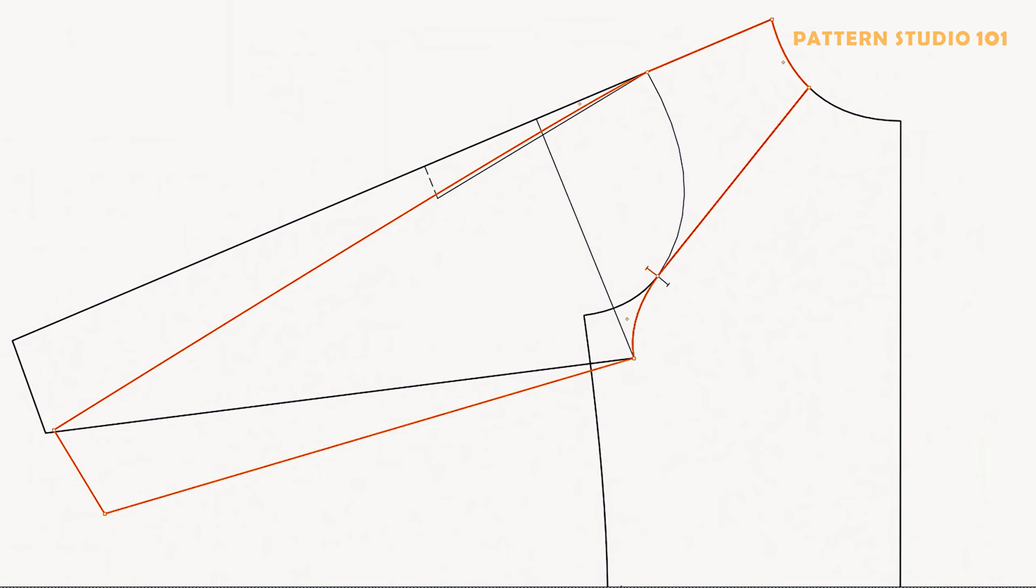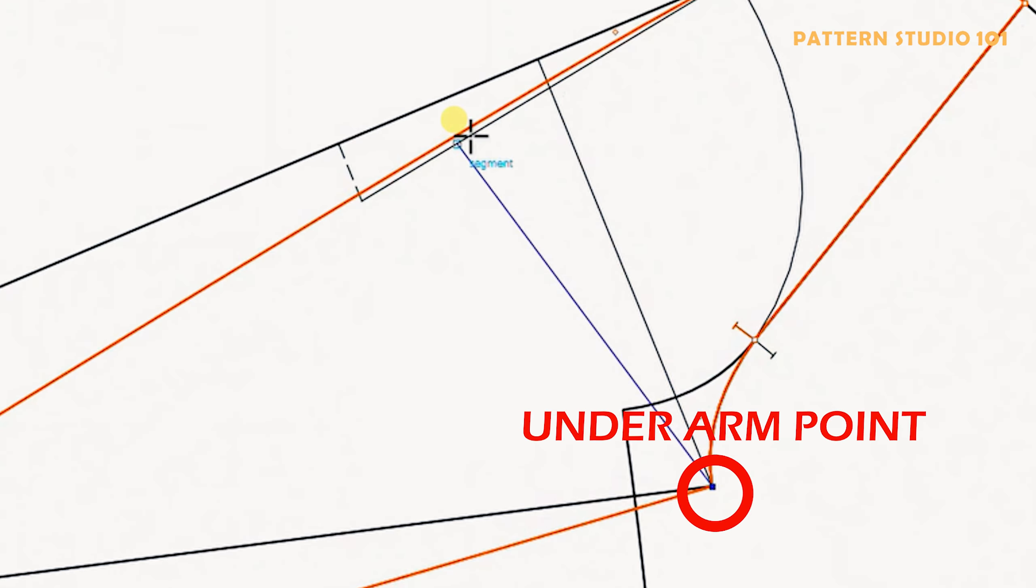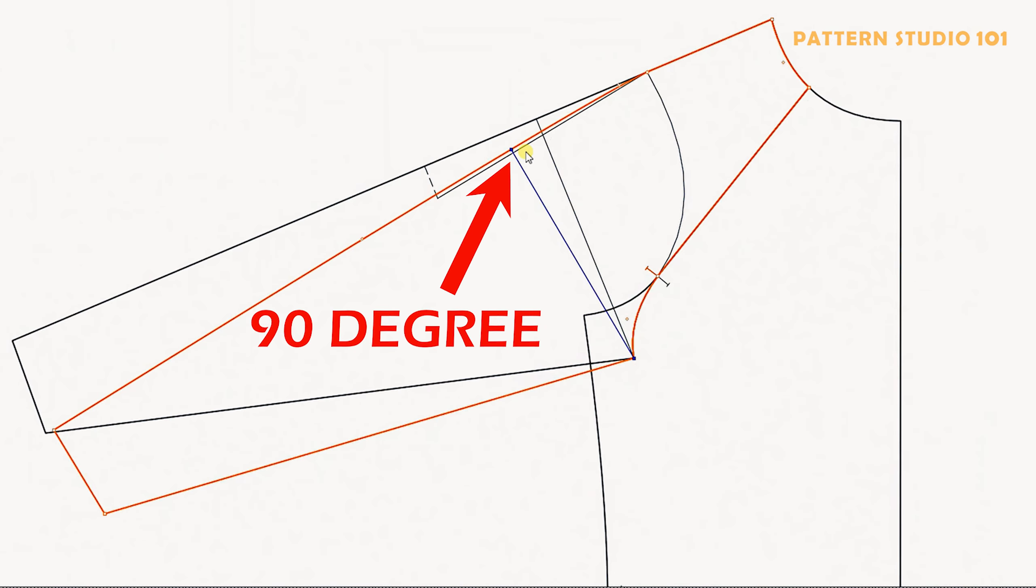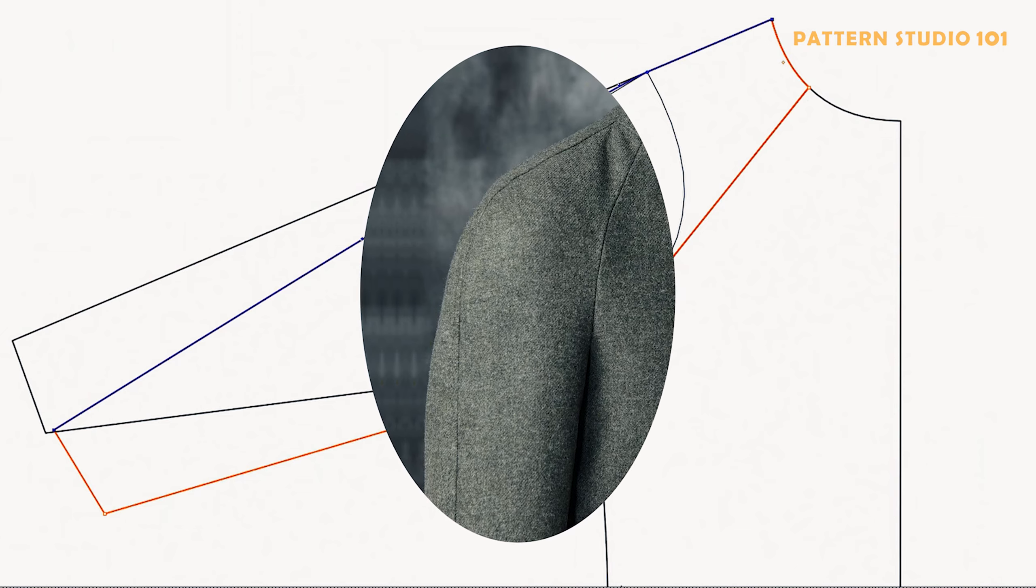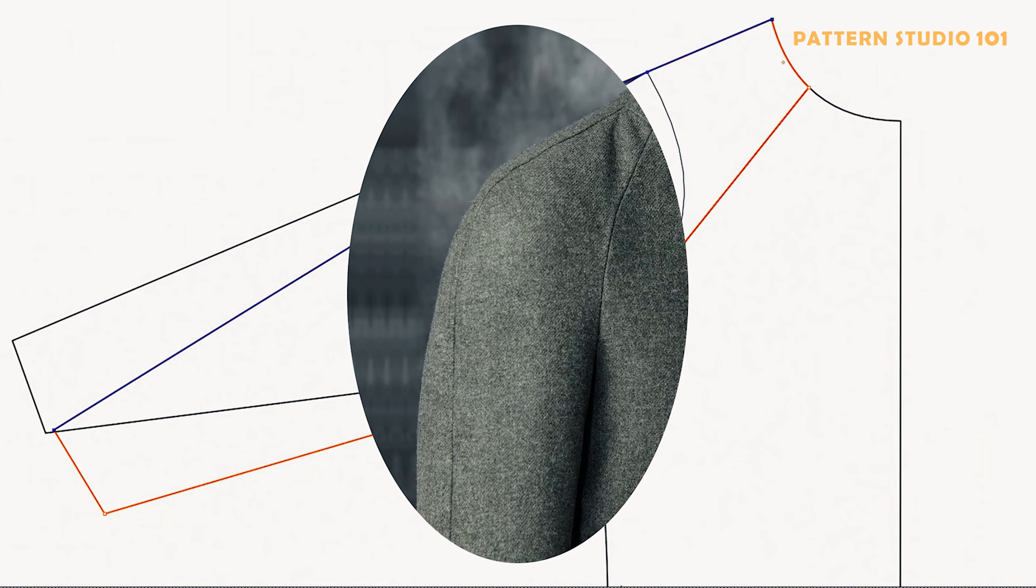Let's draw a bicep line from the underarm point to the shoulder extension. Don't forget this must be 90 degrees. Because you have a curved shoulder line, you cannot make a one-piece sleeve. You're gonna cut the front sleeve and the back sleeve so you will have a seam all the way down to the hem.